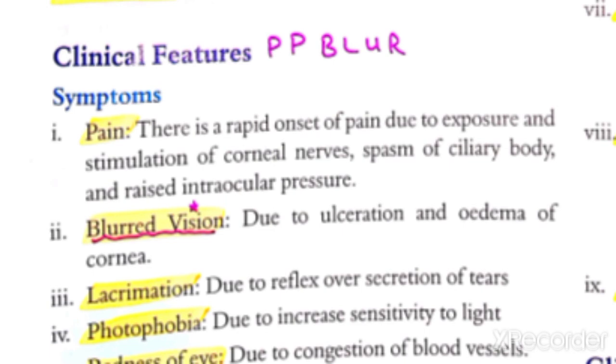The patient will complain of halos - when looking at any source of light, a bright area around the light is visible, which is called halos. The patient presents with this complaint. The signs we observe will be discussed in the next part, covering clinical diagnosis and treatment.